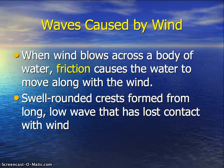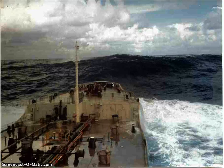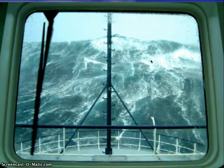When wind blows across a body of water, friction causes the water to move along with the wind. Swell-rounded crests form from long, low waves that have lost contact with the wind. Here are some examples of swells — very large waves out in open ocean. During a storm, you can have swells of 20, 30, 40 feet, usually associated with very major storms.